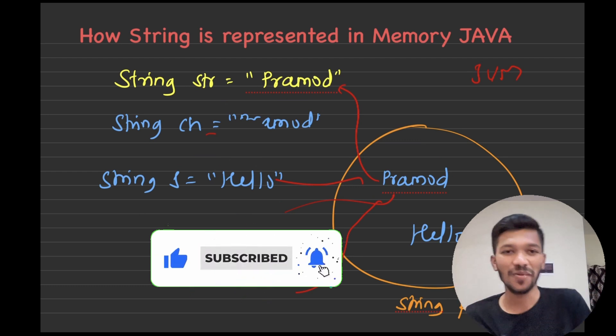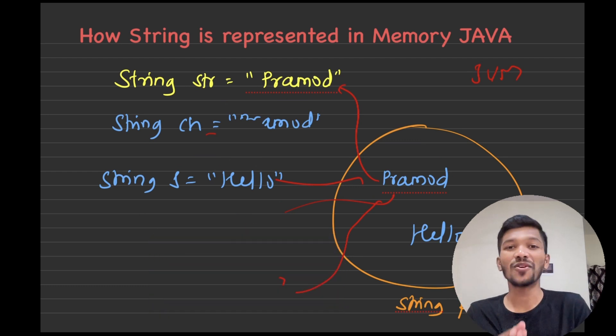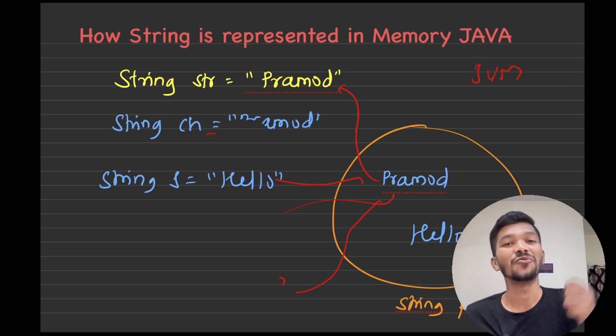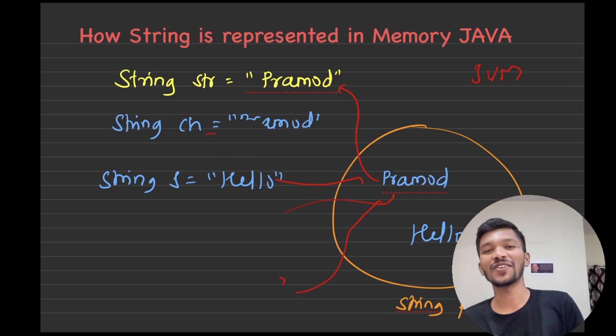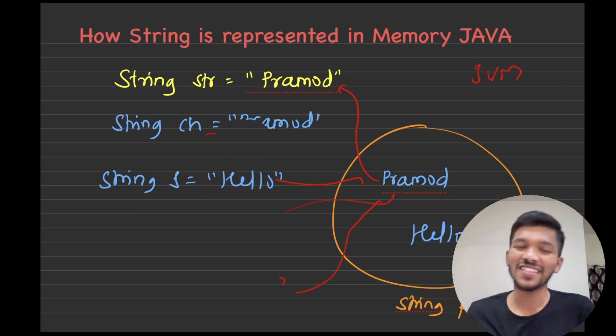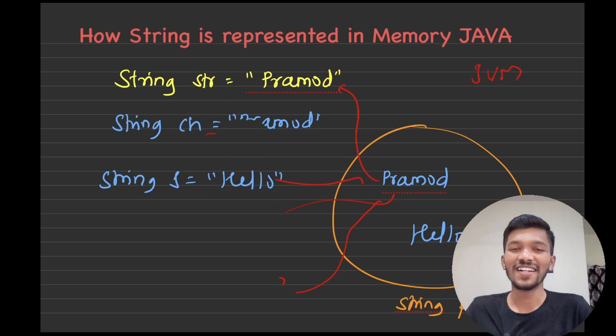I hope you got a good idea of what a string is, how strings are represented in C++ and Java. In the next video, we will be discussing mutable strings and immutable strings in Java. If you are new to the channel, do subscribe for more such informative videos. Till then, see you in the next video.